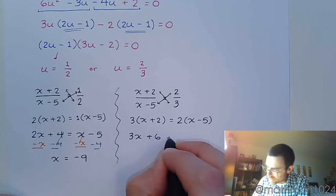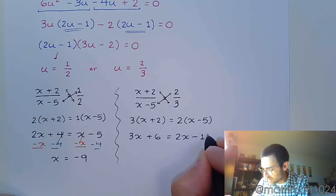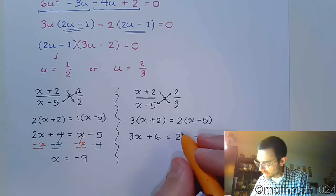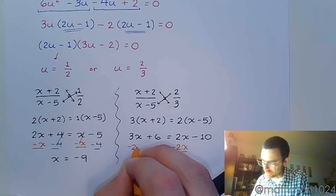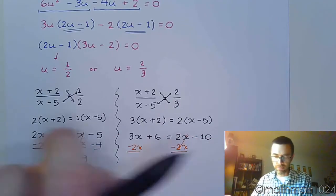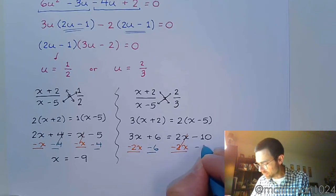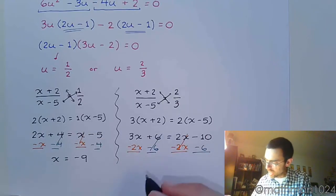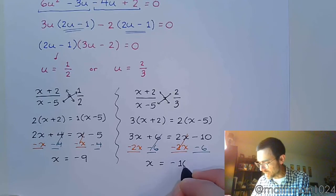So 3x plus 6 equals 2x minus 10. Let's subtract 2x to move the variables to the left. That way we can maintain a positive coefficient for that. Move the 6 to the other side.